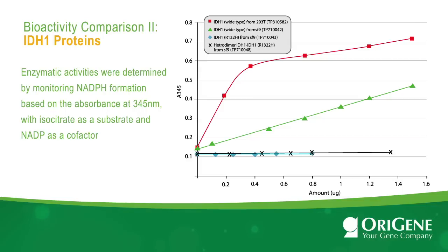The blue dot and cross represent cancer-related mutant IDH1 R132H as a homodimer or heterodimer. In summary, HEK-293 cell-produced IDH1 is much more active than SF9 cell-produced IDH1, while the R132H mutant and the WT/R132H heterodimers are inactive.